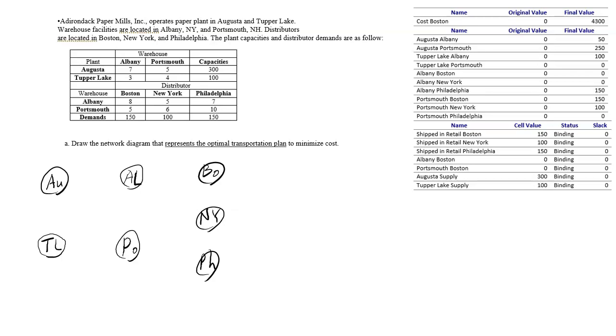Now Augusta to Albany is 50 units, so I put 50 there. Augusta to Portsmouth is 250, so I put 250. Tupper Lake to Albany is 100. Tupper Lake to Portsmouth is 0 so we don't put any arrows there.